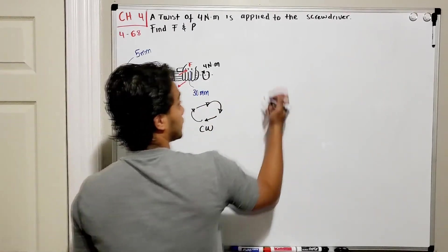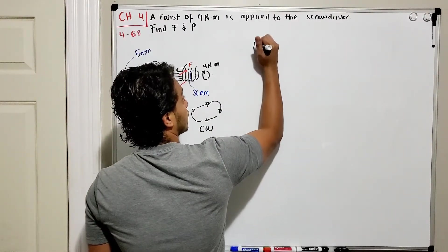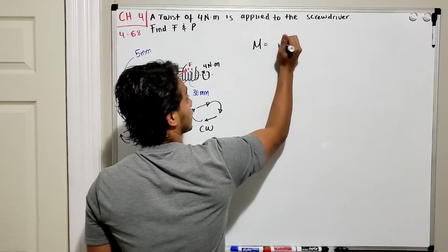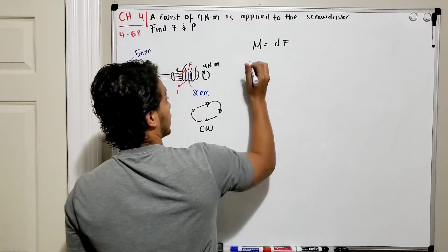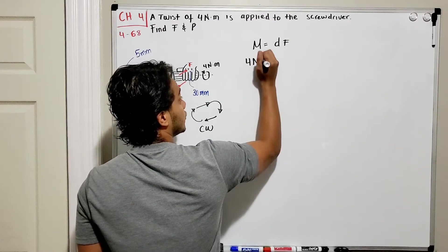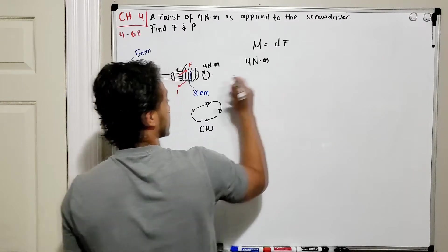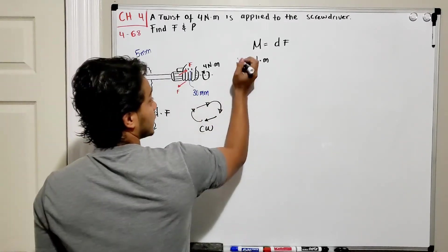So we know that moment is going to be equal to distance times force. If our moment is equal to 4 newton-meters, in this case it's clockwise, so I'm going to put clockwise as negative.